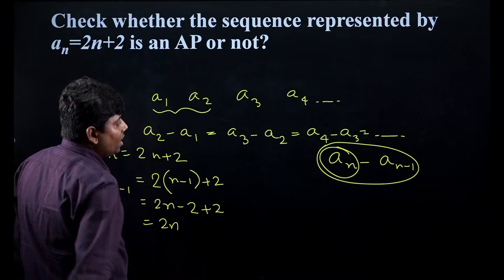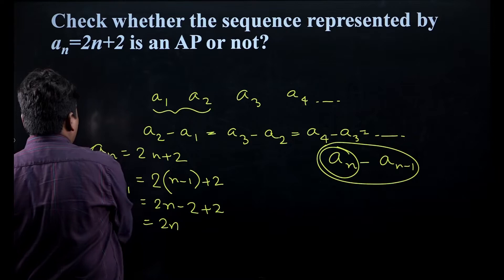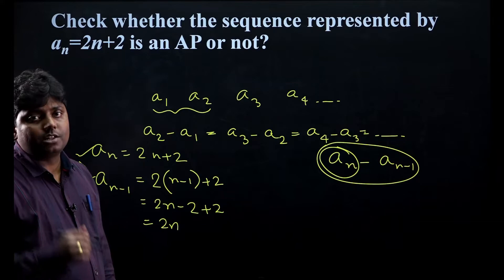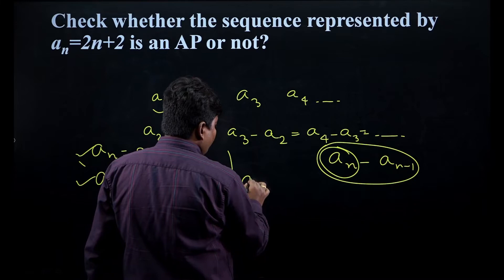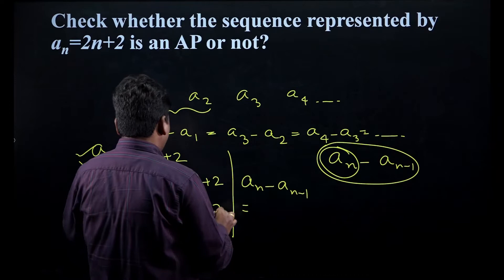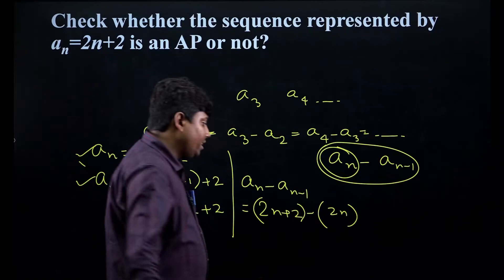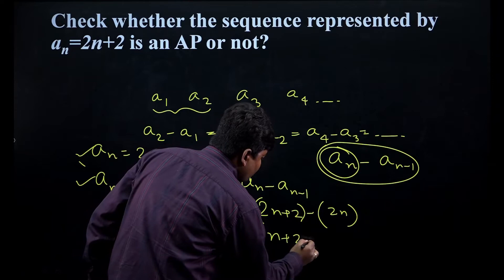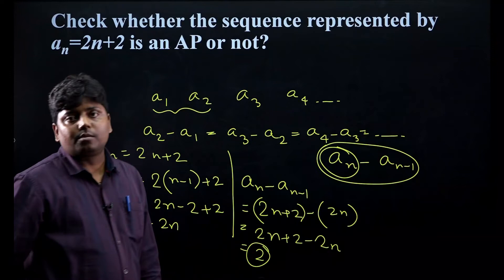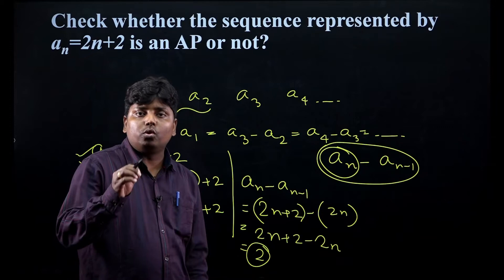Now we need to find aₙ minus aₙ₋₁. We have aₙ already given and aₙ₋₁ we have already found. So directly we can find the difference: aₙ − aₙ₋₁ = (2n + 2) − 2n = 2. So we are left with 2.